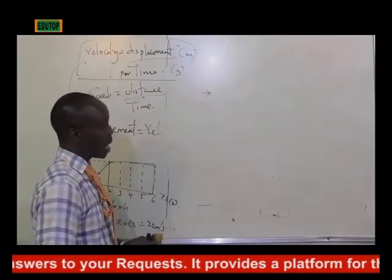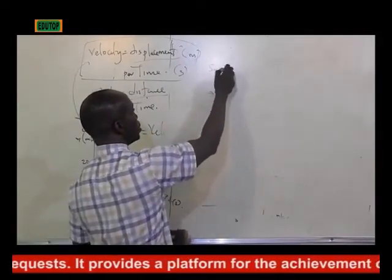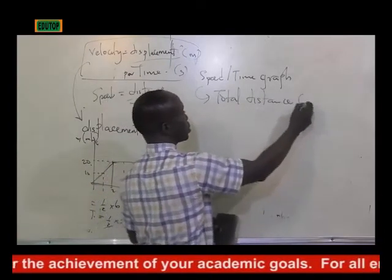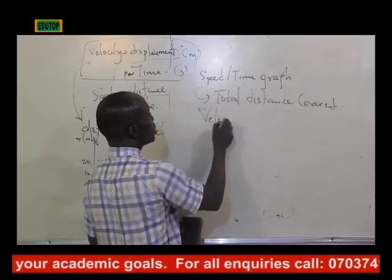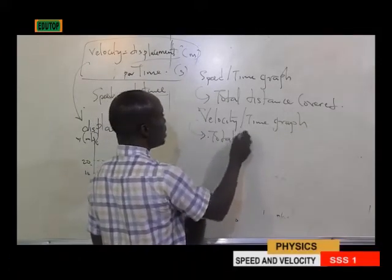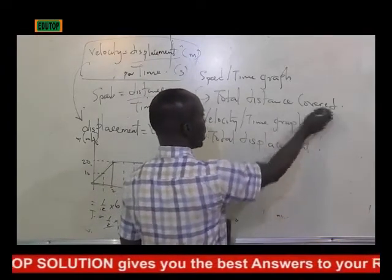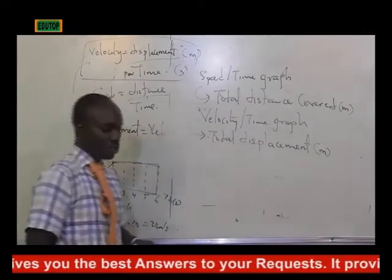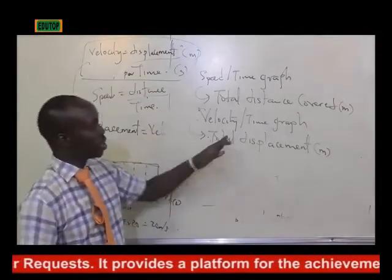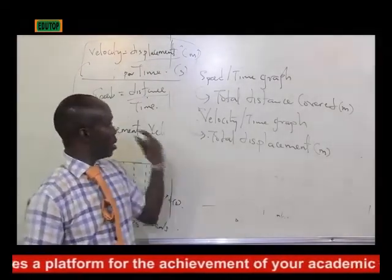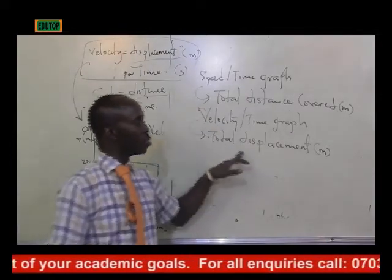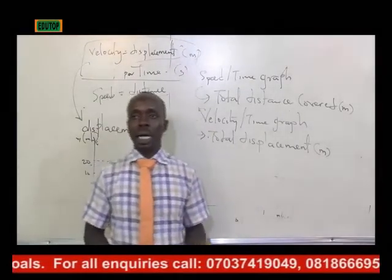There are some important things to know: if you are dealing with a speed-time graph, you'll be told to calculate total distance covered. If you are dealing with a velocity-time graph, you'll be told to calculate total displacement. Both are measured in meters, but you must properly distinguish between the two so your examiner knows you understand the difference.